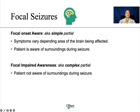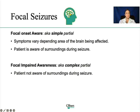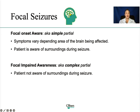Under focal seizures, we have simple and complex. Under simple, symptoms vary depending on the area of the brain that is affected. But the big difference is that the patient is aware of the surroundings, versus in the complex — or focal-impaired awareness — the patient is not aware of the surroundings. Keep in mind that focal-onset aware can turn into focal-impaired aware.